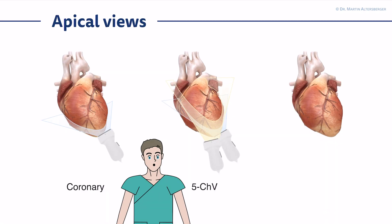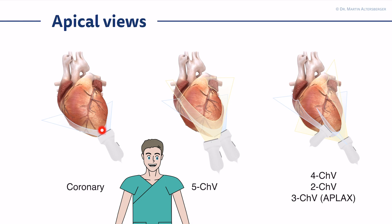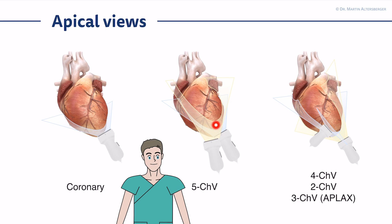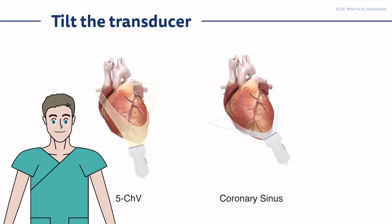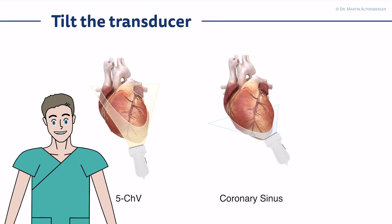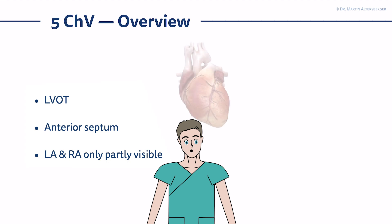Here you have the overview of the views and the tilting and the rotation again. For the coronary sinus view, you tilt downwards, and for the five-chamber view, you tilt upwards towards the aortic path. The tilting upwards and downwards is the key to optimize your images and get optimal views.